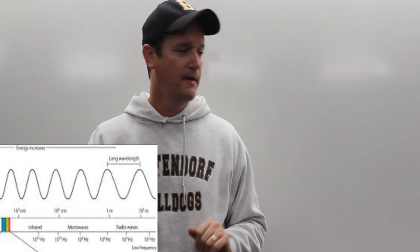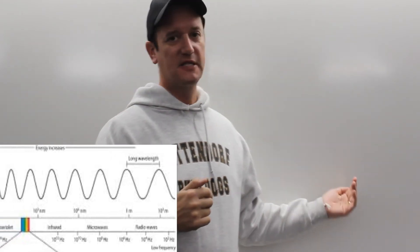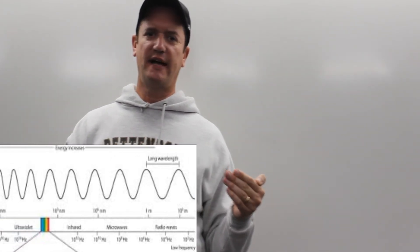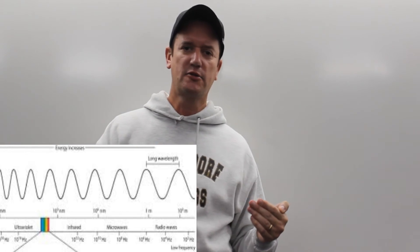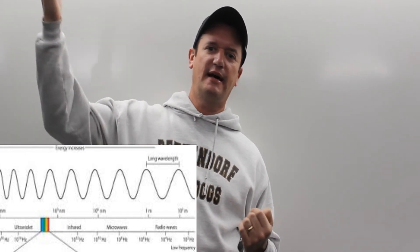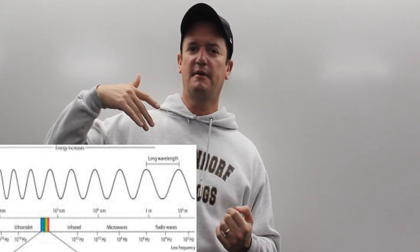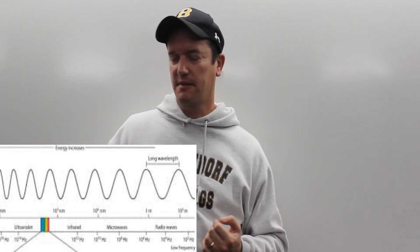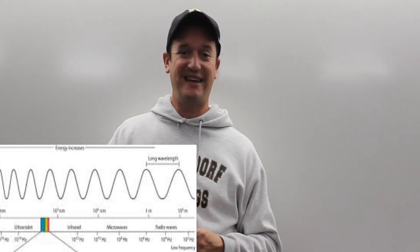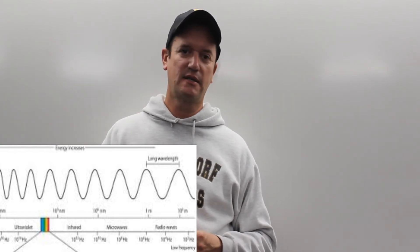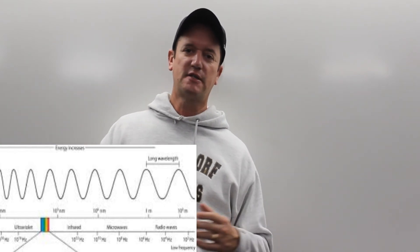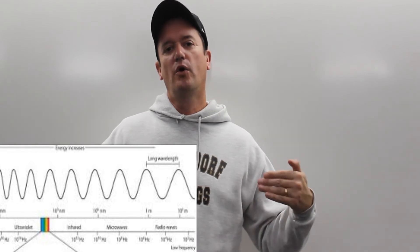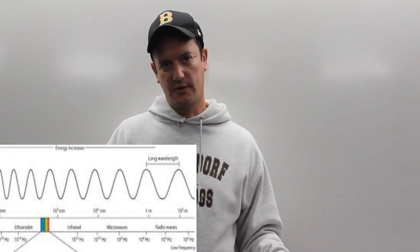Right above visible light is UV — ultraviolet. We get a lot of ultraviolet light from the sun, and also from black lights, tanning beds, and those kinds of things. UV is of course most famous for your suntan or your skin cancer, so let's talk about how that works.